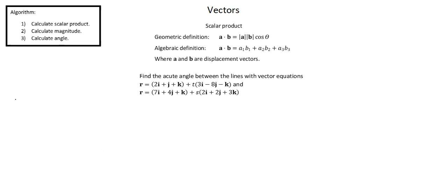Proceeding to the algorithm, step 1: calculate scalar product. Looking at our scalar product definitions, note that A and B are displacement vectors. In this example, we're given two line equations, so we need to identify the displacement vector — that's the direction vector, the vector multiplied by the scalar.